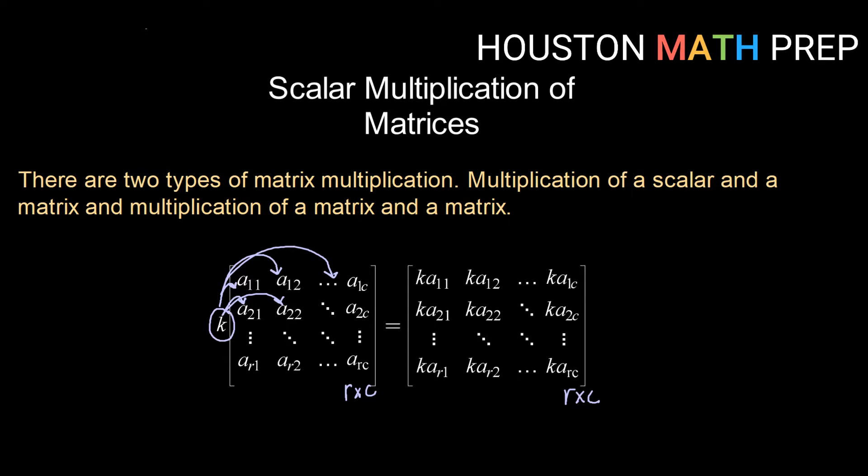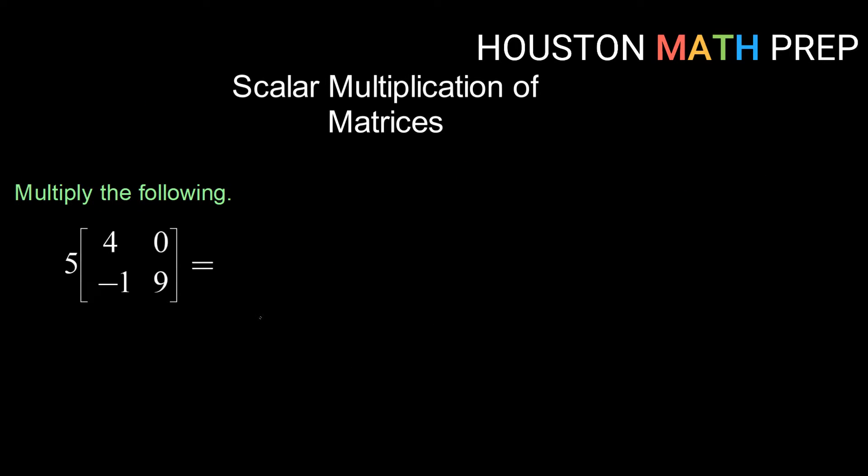So let's take a look at some examples. Let's multiply the scalar 5 by the 2 by 2 matrix shown here. I know already that my answer is going to be a 2 by 2 matrix because the matrix in my problem will match the dimensions of the matrix in my answer. So I'm going to multiply 5 times 4 in row 1, column 1, and that will give me a value of 20.